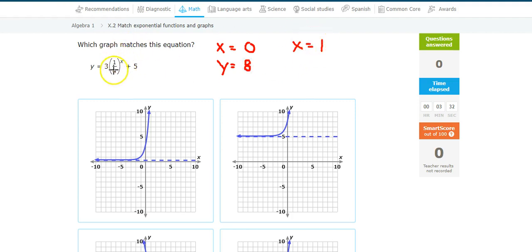And now let's put a 1 into it. 1 fourth to the first power is 1 fourth, times 3 turns out into 3 fourths, plus 5 turns it into 5 and 3 fourths.